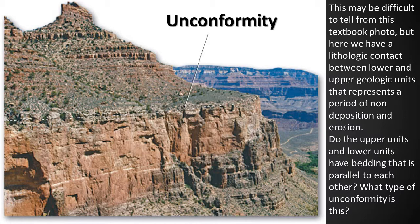Here we have a lithologic contact between lower and upper geologic units representing a period of non-deposition and erosion. The upper and lower units have bedding that is parallel to each other. This is an example of a disconformity.